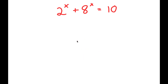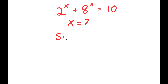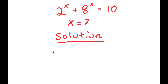Alright, so in this problem I have 2 to the power of x plus 8 to the power of x is equal to 10. I want to find the value of x here, so for my solution, I get 2 to the power of x plus 8 to the power of x is equal to 10.